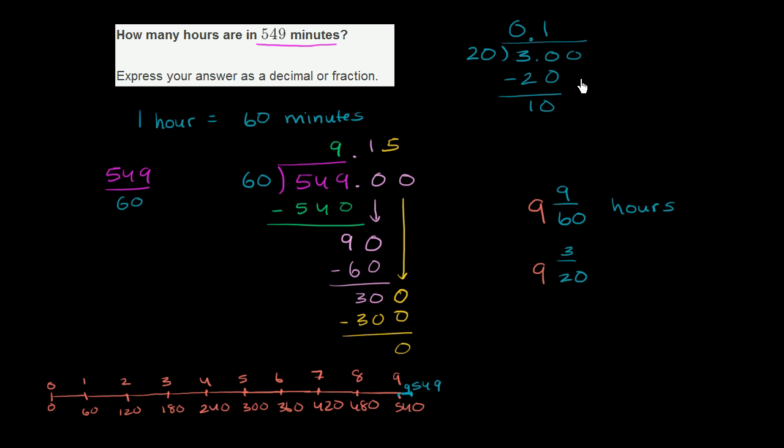Subtract, get a 10, bring down a zero. 20 goes into 100 five times. 5 times 20 is 100. And we are done.